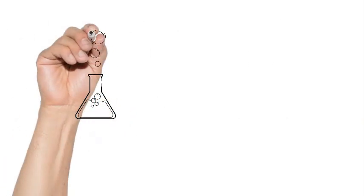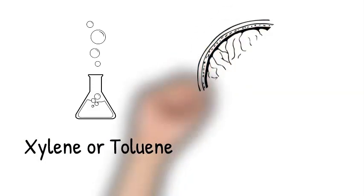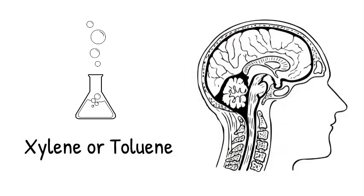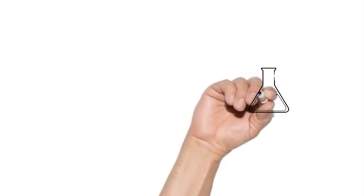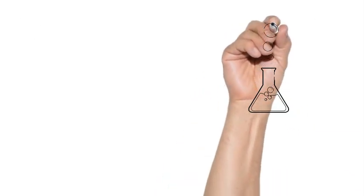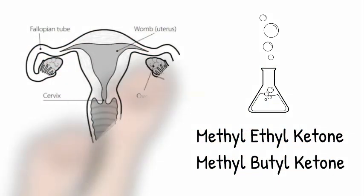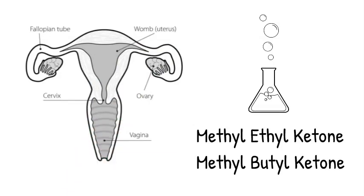If xylene or toluene are the solvents, I typically see any of four flukes using the brain as a secondary host. If methyl ethyl ketone (MEK) or methyl butyl ketone (MBK) are the solvents, the uterus becomes a secondary host, and endometriosis is a likely result.